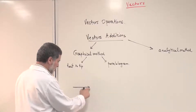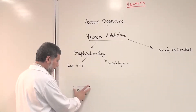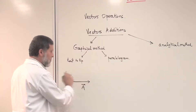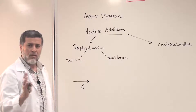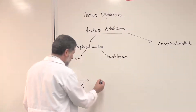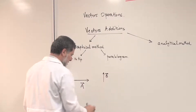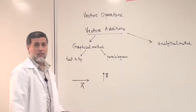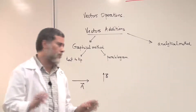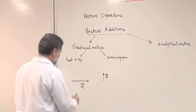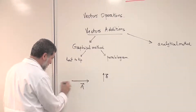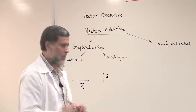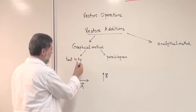We can move a vector in space by keeping the same magnitude and same direction — this will not change the vector. We have another vector called B, which has a smaller magnitude than vector A and a different direction. We call the starting point the tail of the vector and the arrow end the head.